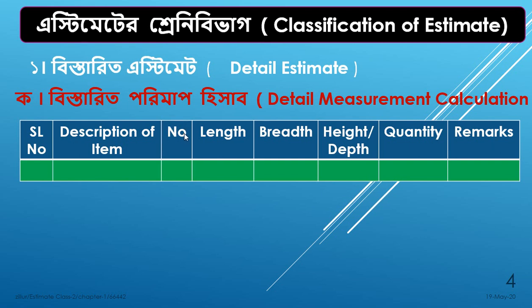We are talking about 10 tables. We are identifying one sector using length, width, and height. Then we look at quantity — quantity means length, width, and height.